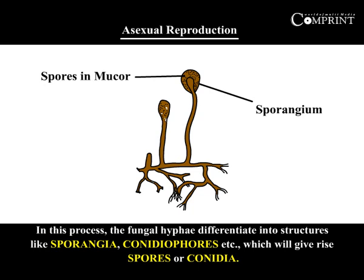In this process, the fungi have differentiated into structures like sporangia and conidiophores, which give rise to spores or conidia.